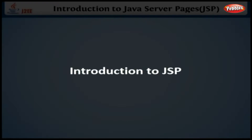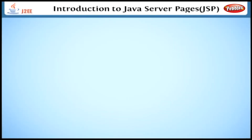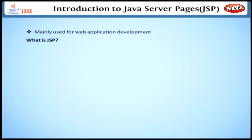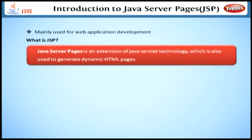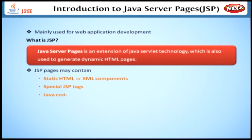Introduction to Java Server Pages. JSP is one of the Java EE components which are mainly used for web application development. Java Server Pages is an extension of Java Servlet technology which is also used to generate dynamic HTML pages. JSP pages may contain static HTML or XML components, special JSP tags and Java codes.